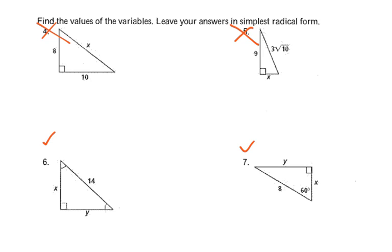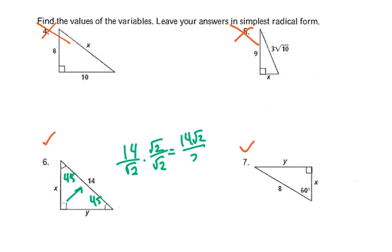Let's see how you did. This is a 45-90 triangle. We have our hypotenuse, so we're going to take the 14 and divide by radical 2. When we do that, we need to multiply by radical 2 on the numerator and denominator, and we will get 14 radical 2 over 2. We can simplify that to 7 radical 2. So X and Y both equal 7 radical 2.